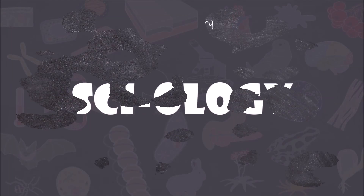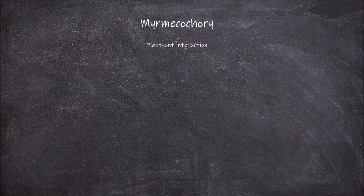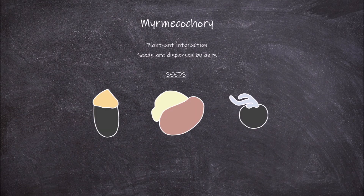Welcome back to my channel. In today's video we're going to go over myrmecochory. Myrmecochory is a type of plant-ant interaction where seeds are dispersed by ants. This interaction is usually a mutualism between the plant and the ants. Plants that use ants for dispersal of their seeds are known as myrmecochorous plants.